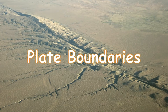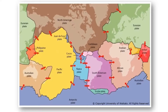Plate boundaries. Earth's crust is split into pieces called plates — here's the South American plate, the Nazca plate, and the Pacific plate, for example. The plates of the Earth's crust are solid rock, and when thinking about plates, ignore the idea of continents and oceans.